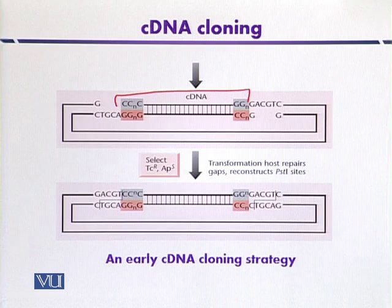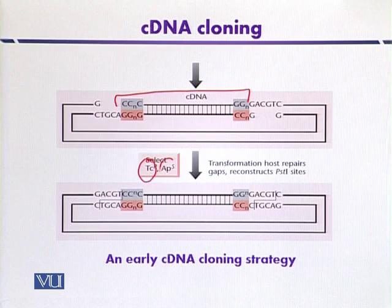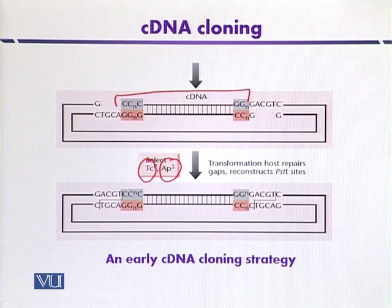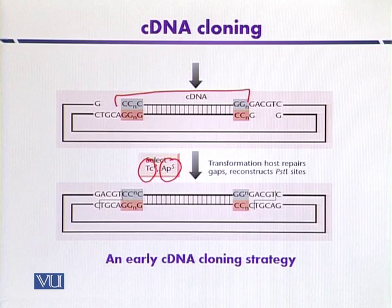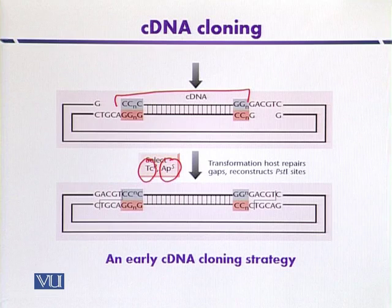The recombinant vector is then transformed into a suitable host organism. The growth medium contains specialized antibiotics like tetracycline and ampicillin, so only those recombinants that have the insert in a suitable vector will be able to grow. During the growth process, any remaining nicks are ligated by the host organism. This is the early strategy for cDNA cloning developed by Maniatis and co-workers in 1976.